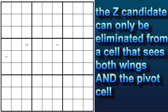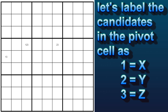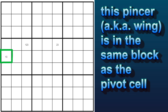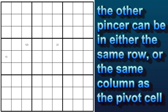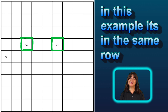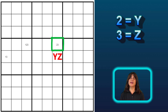The difference here is that now the Z candidate can only be eliminated from the cell that sees both pincers and the pivot cell. In this example, the pivot cell has all three candidates — let's label them as X, Y, and Z. And one of the pincers is in the same block as the pivot cell — let's label these as X and Z. And then the other pincer or wing will be in either the same row or column as the pivot cell. In this example, it's in the same row.